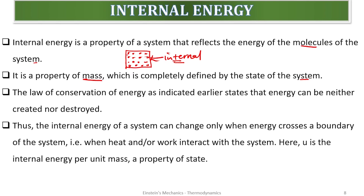For example, if a system has six molecules and each molecule has an energy of two kilojoules, the system possesses 12 kilojoules of energy. If the same system contains 10 molecules, each possessing two kilojoules, we have 20 kilojoules of energy. This means internal energy is a property of mass.